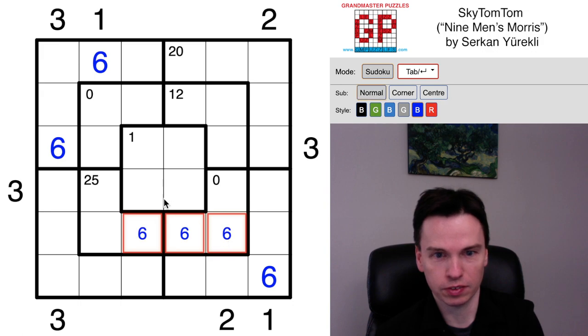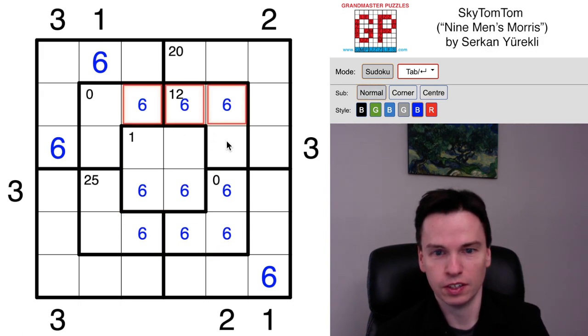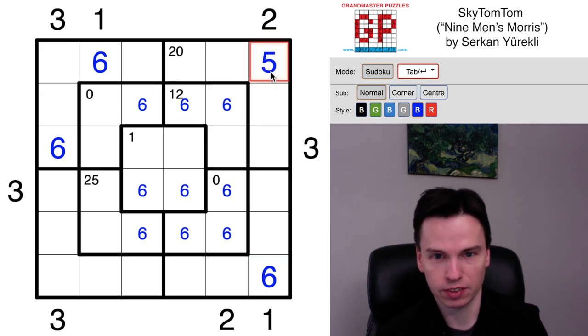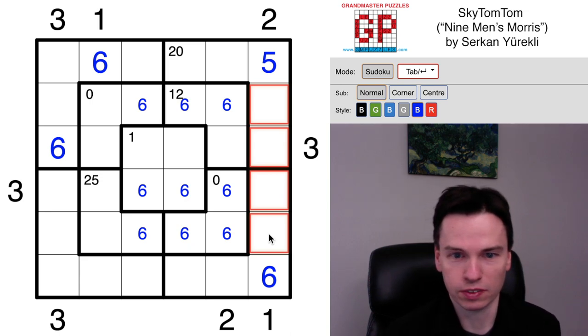I get a six then left over in these cells, not yet very useful. Other skyscraper clue, this two sees into this row that has a six all the way at the end, so needs a five here so that all these buildings are hidden.